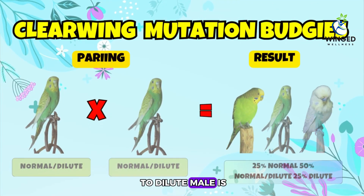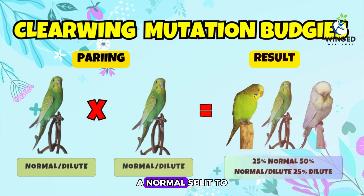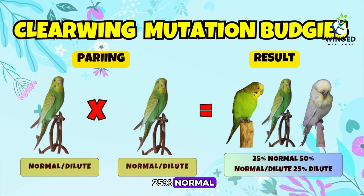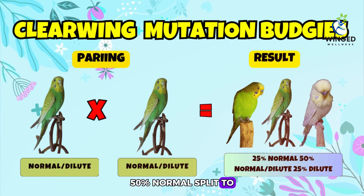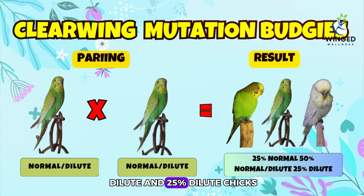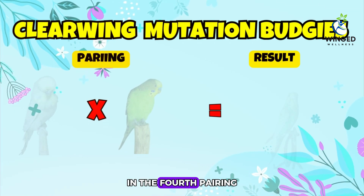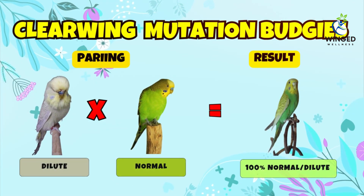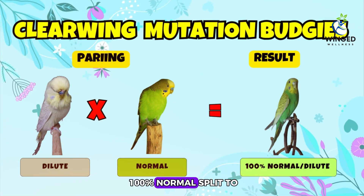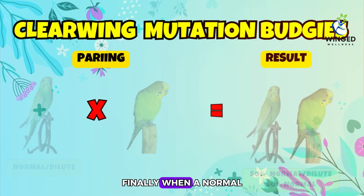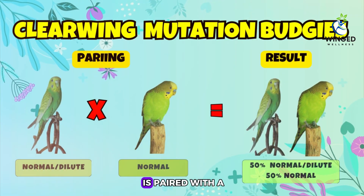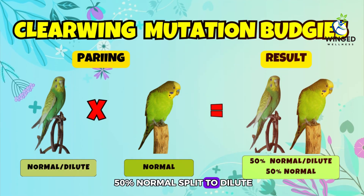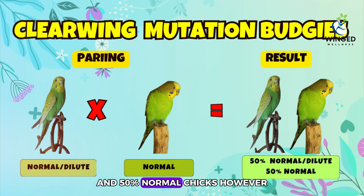For the third pairing, when a normal split to dilute male is paired with a normal female, the result will be 25% normal, 50% normal split to dilute, and 25% dilute chicks. In the fourth pairing, where a dilute male is paired with a normal female, the result will be 100% normal split to dilute chicks. Finally, when a normal split to dilute male is paired with a normal female, the result will be 50% normal split to dilute and 50% normal chicks.